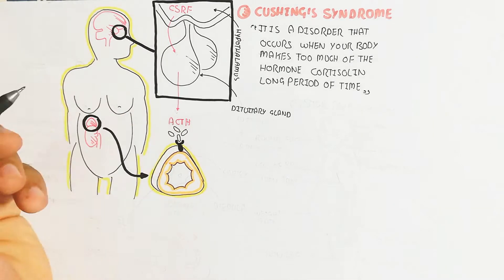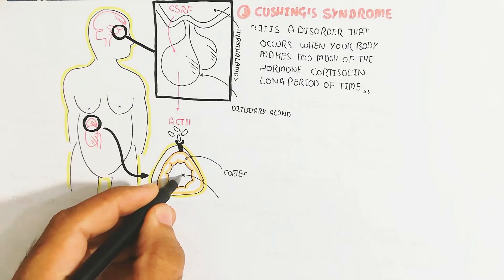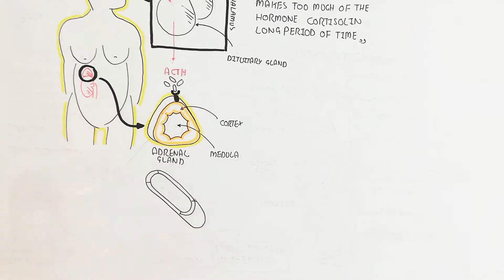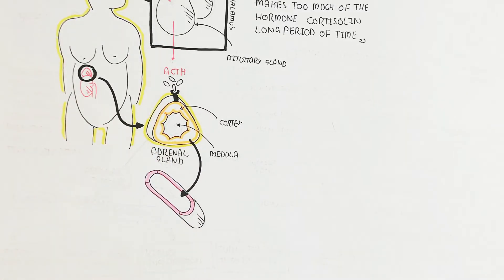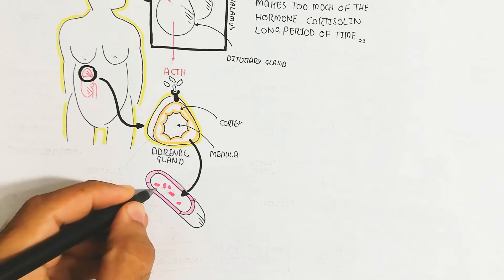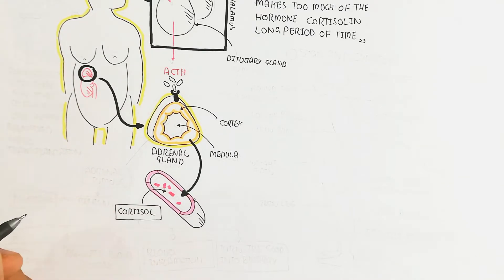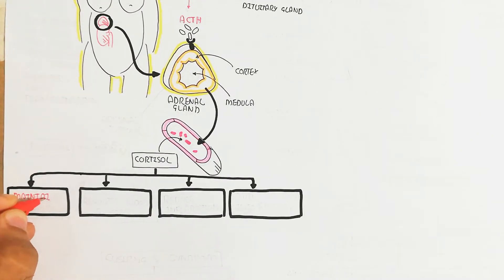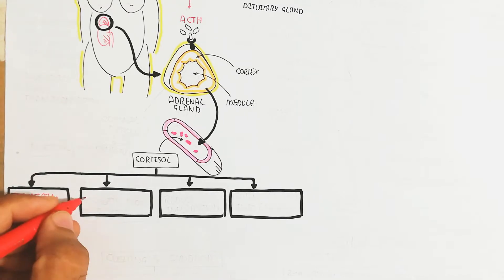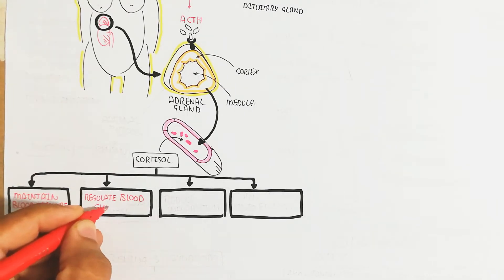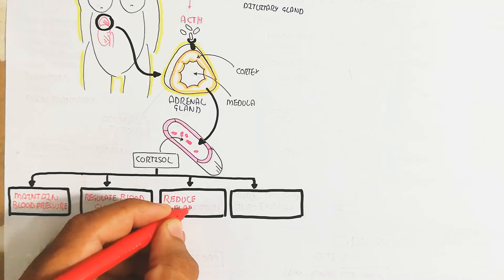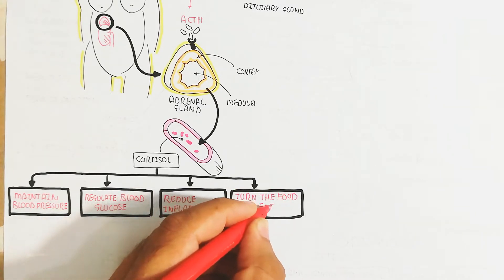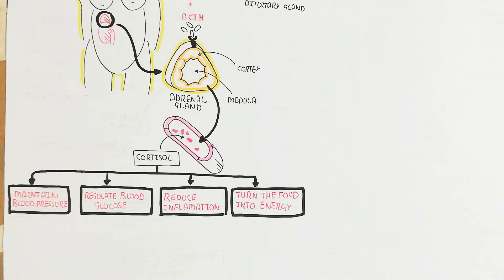This adrenocorticotropic hormone will target the adrenal gland and bind with the adrenal cortex — this is the medulla and this is the cortex — and when it binds, it will release cortisol. This cortisol hormone increases in the blood circulatory system. In normal conditions, cortisol is beneficial: it maintains blood pressure, regulates blood glucose, reduces inflammation, and turns food into energy — these are the metabolic effects of cortisol.